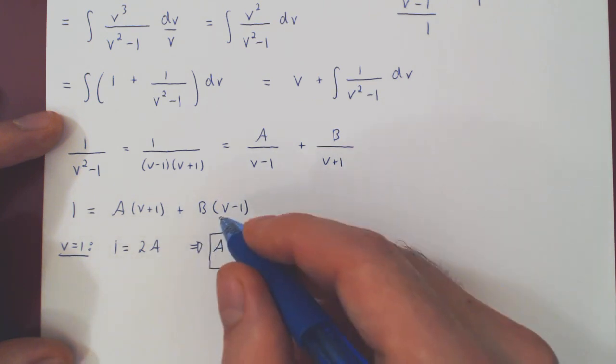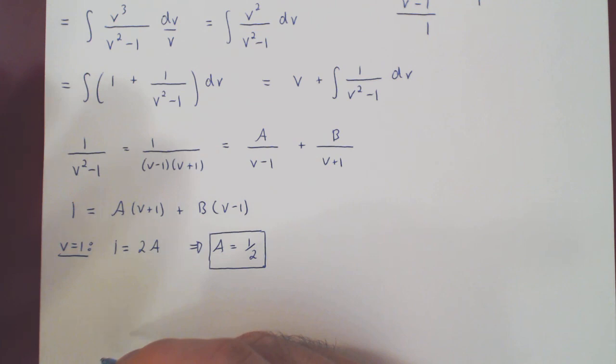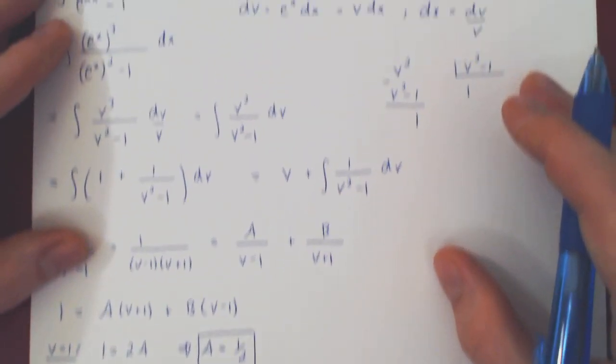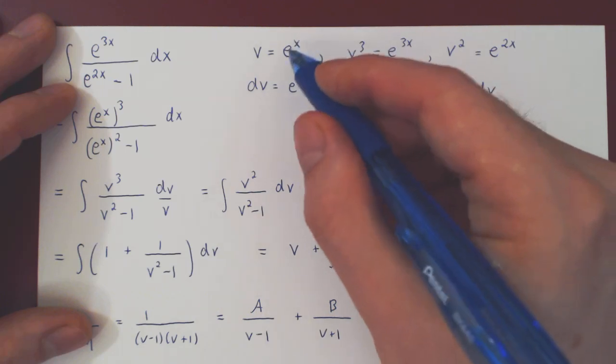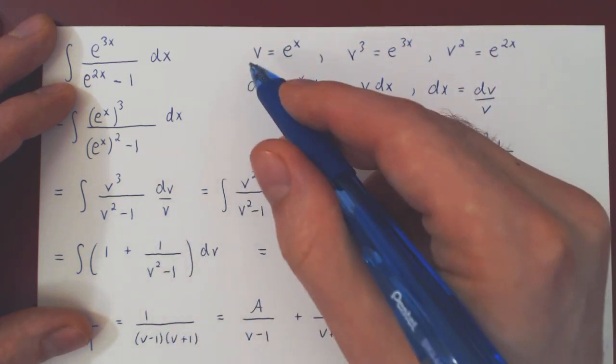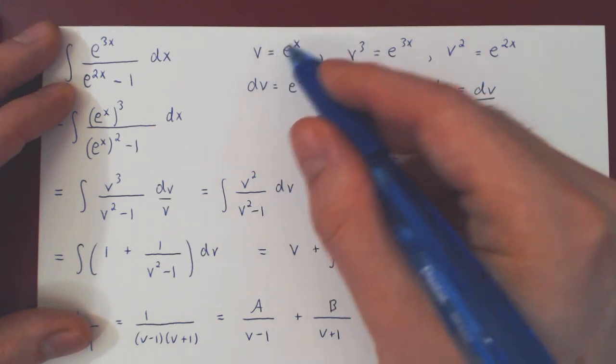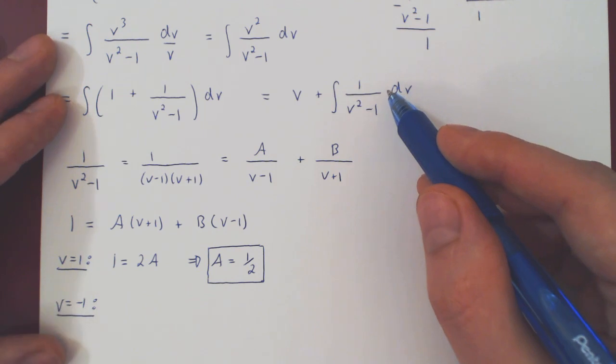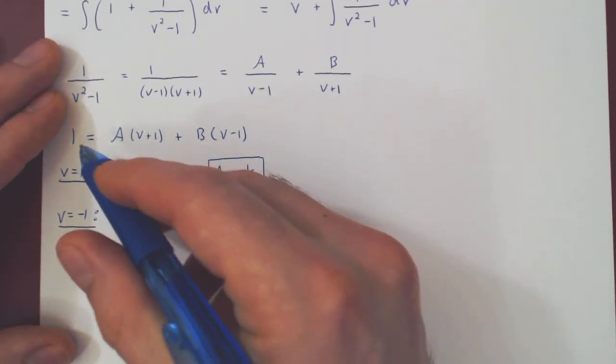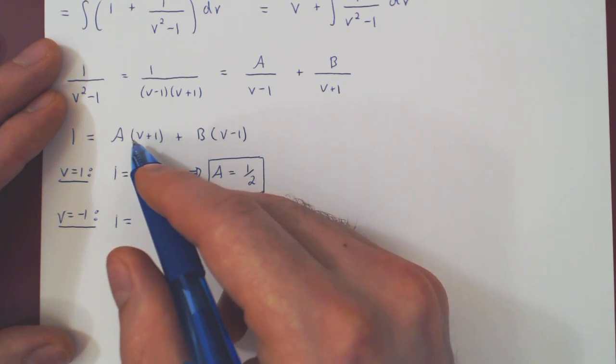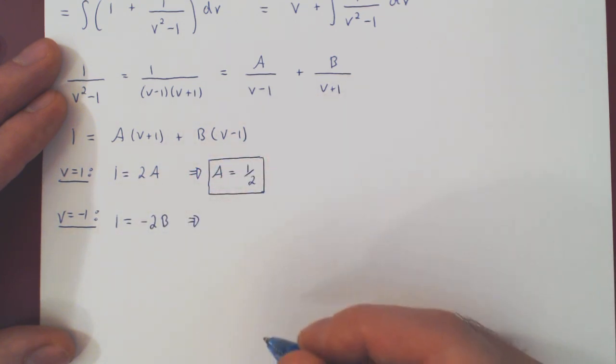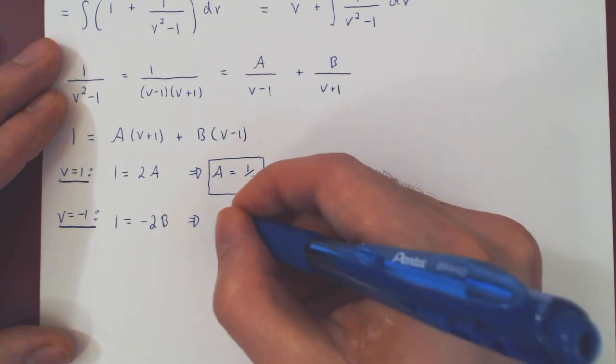And if you choose v to be negative 1. And what's interesting here, by this choice of v, is it doesn't really make sense with the initial substitution. If you look back, v was e to the x. And e to the x for real values of x is always truly positive. But, even though it doesn't make sense to pick v to be negative 1, with respect to the original substitution, if we ignore this, and we focus on this integral only, then the value of negative 1 for v makes perfect sense. So we have now 1 equals, negative 1 plus 1 is 0, so A vanishes. Negative 1, negative 1 is negative 2, so negative 2B. Multiply both by negative 1 half, and of course B is negative 1 half.